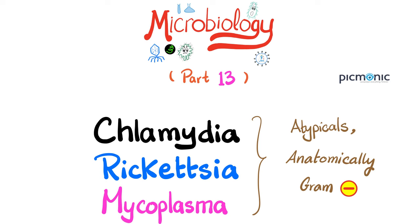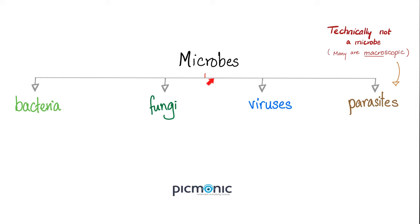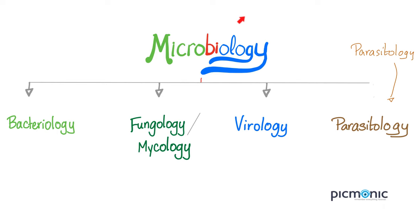What is microbiology? 'Ology' means the study of, 'bio' means life, 'micro' means small — so it's the study of small life. Microbes are divided into bacteria, fungi, viruses, and parasites, which means microbiology is divided into bacteriology, mycology, virology, and parasitology. Today we're talking about bacteria.